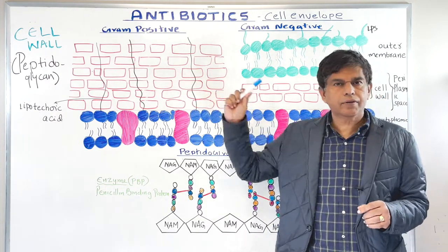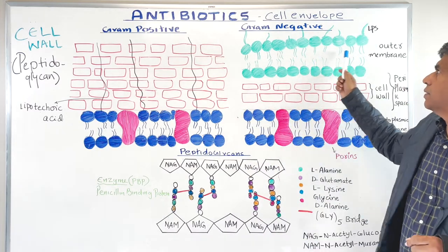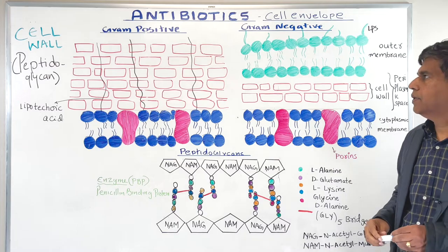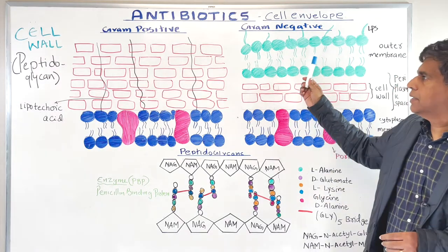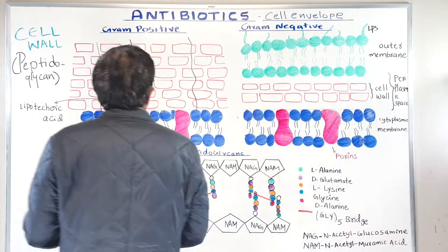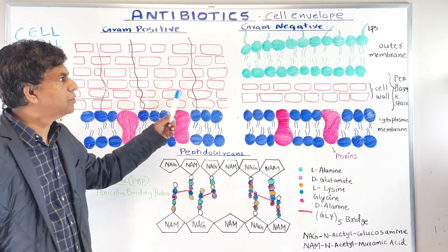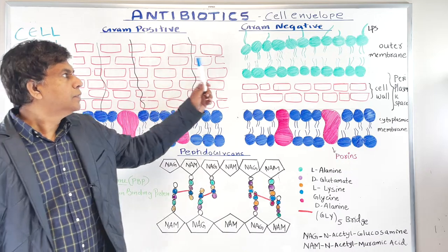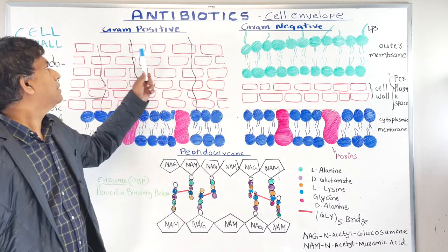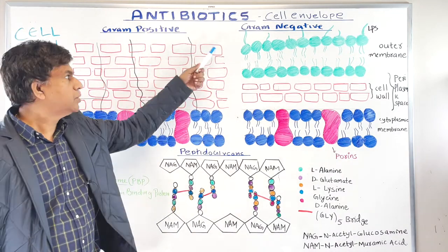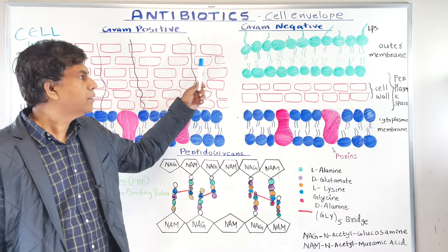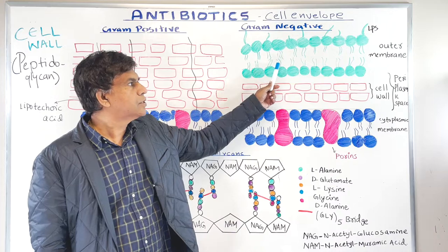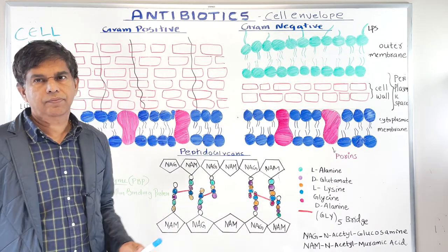On this side, we got gram positive. On the other side, we got gram negative, the structure. Now, when you look at the gram negative, I'm just going to stop right here. When you look at it, they have something special called outer membrane. So this outer membrane, does gram positive have it? Do you see it over here? No. So they're missing, gram positive missing this outer membrane.